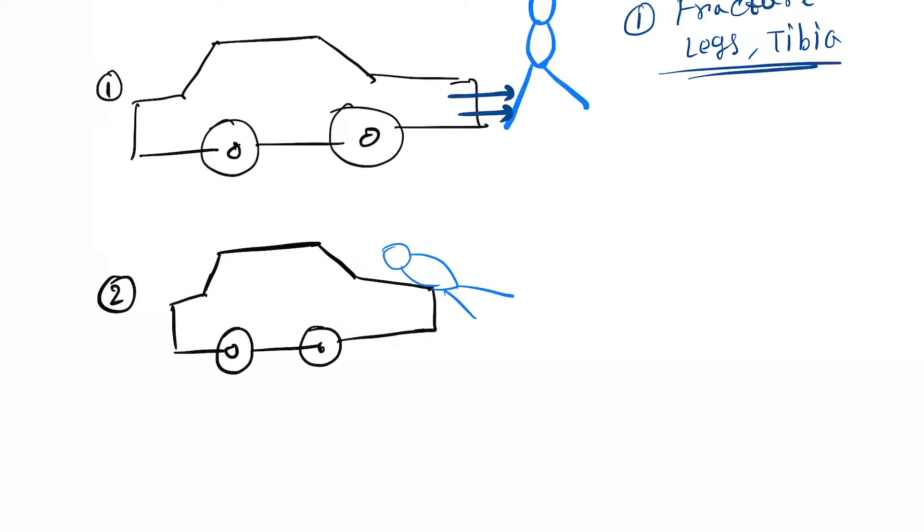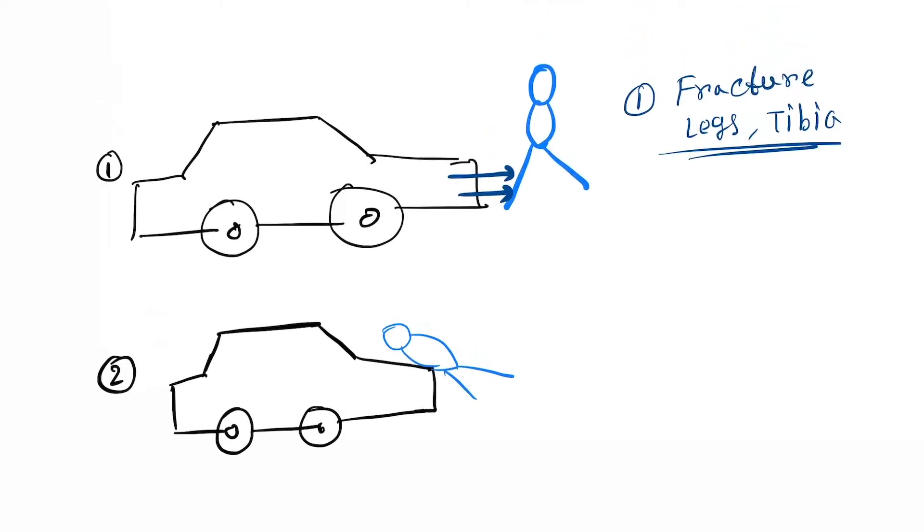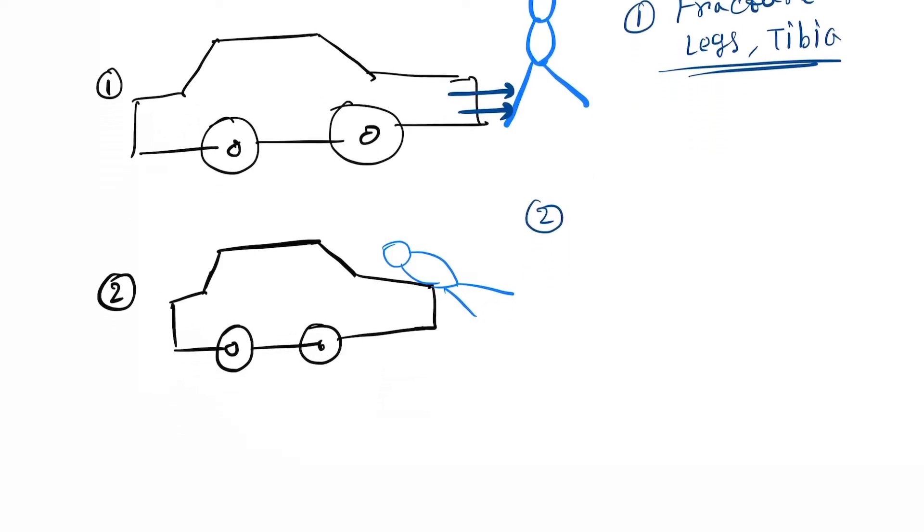In the second scenario, what will happen to the person? Here you can see the head is getting impact hit there, so head injury can occur, skeletal fracture, and also cervical injury - cervical spinal injury.